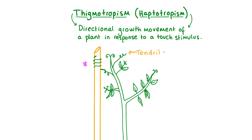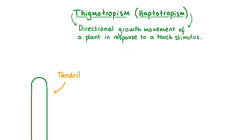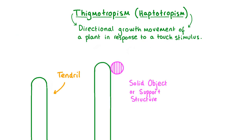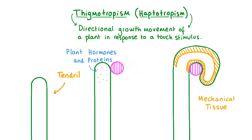In the case of the pea plant this helps to support it, but this can also be a useful response for parasitic plants like this vine to wrap around a host tree and absorb its vital nutrients. The tendrils of climbing plants extend into the air until they come into contact with a solid object, which triggers the release of certain plant hormones. This causes the cells on the side of the tendril in contact with the object to grow slowly, while the cells on the opposite side are stimulated to grow more quickly, causing the tendril to curl around the object. The tendril also becomes thickened with mechanical tissue, which provides climber plants with strong support helping them to stay upright.